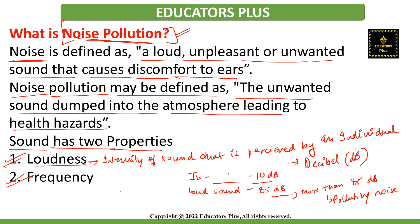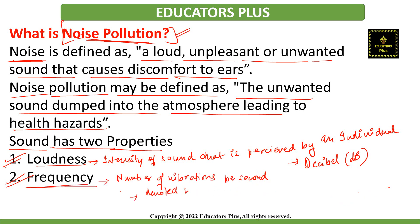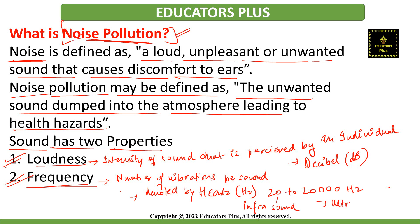Talking about the next property — frequency — it is defined as the number of vibrations per second and is denoted by hertz. The human range of hearing is between 20 to 20,000 hertz. If a sound is below 20 hertz, that is called infrasound. And if sound is above 20,000 hertz, it is called ultrasound.